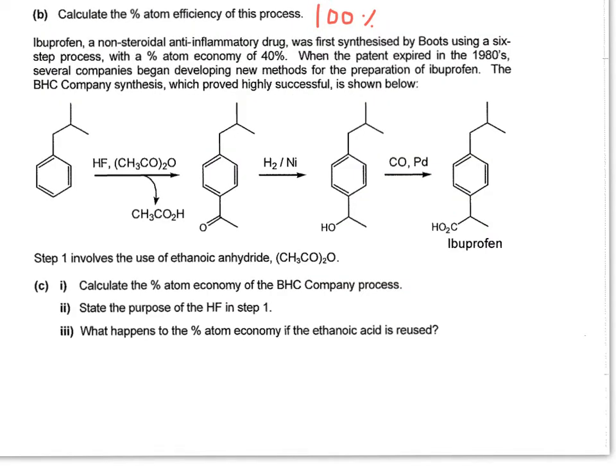So let's move the page down a bit now. So ibuprofen was first synthesized by Boots in a six-step process, with only an atom economy of 40%. And then there's other companies that started to get in the act and start developing new methods, maybe with better atom economies. And the BHC company synthesis, which proved quite good, is shown on this page. So step one involves the use of ethanoic anhydride. So they want you to calculate the percentage atom economy of the BHC company process. So to do this one, we have to work out the molecular formula of ibuprofen so we can get its MR.